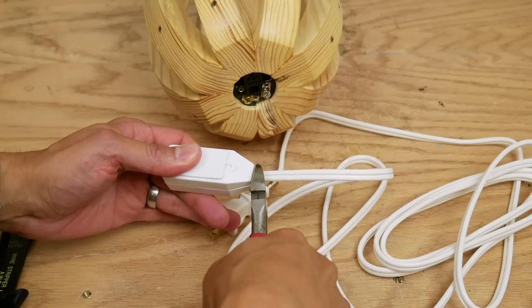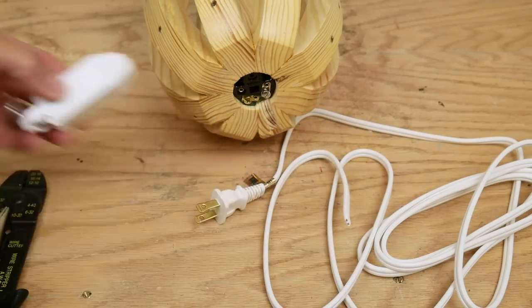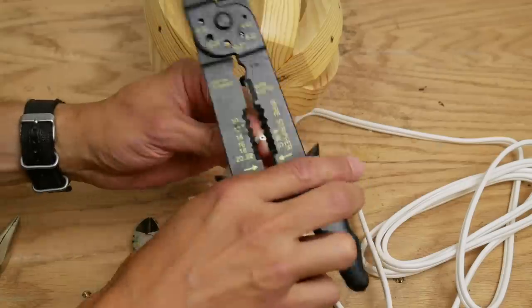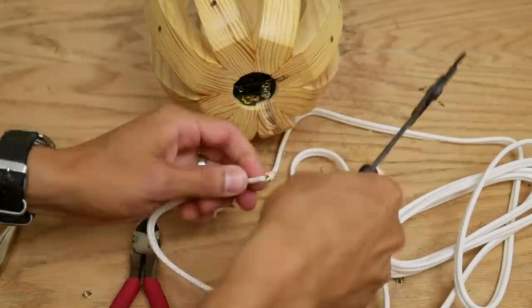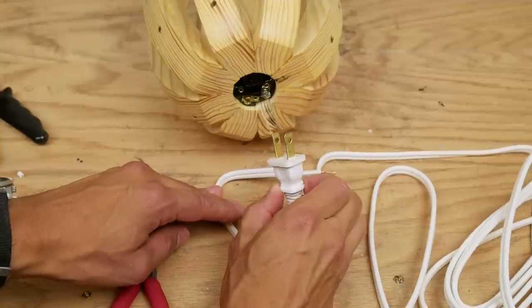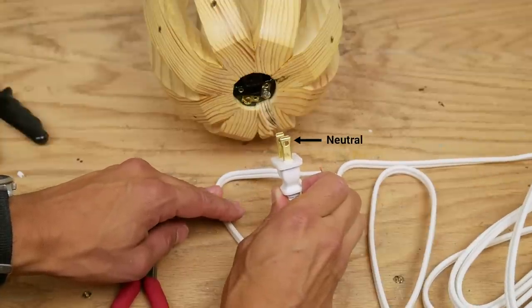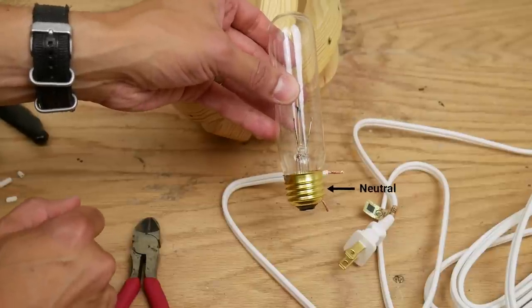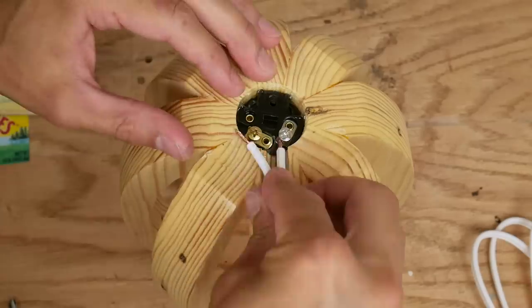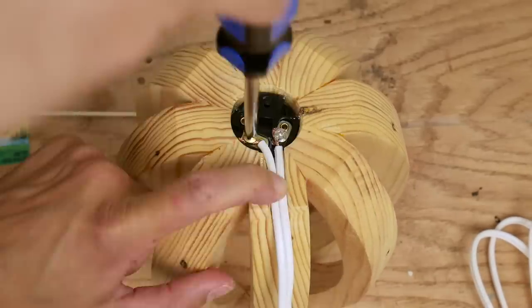As that was curing, I cut the female end off of the extension cord and stripped the wires. The neutral wire of the extension cord goes to the fat prong and it needs to be wired up so it goes to the threaded base of the bulb. On my socket, that's the silver screw. I attached the wires to the correct screws and tightened them down.